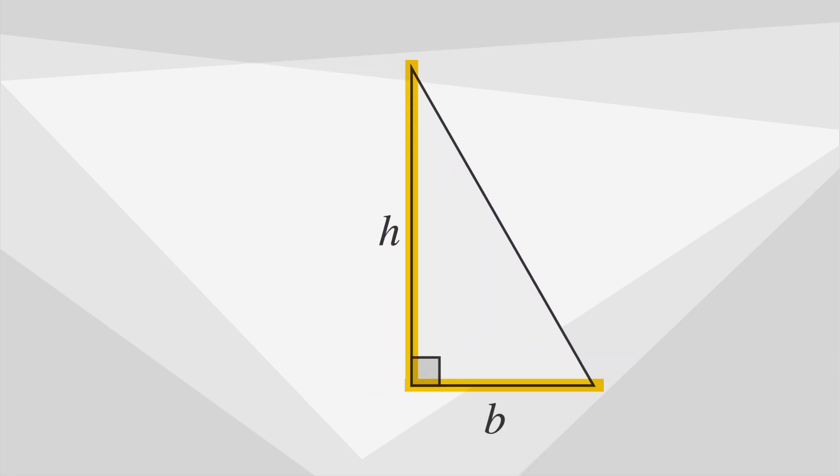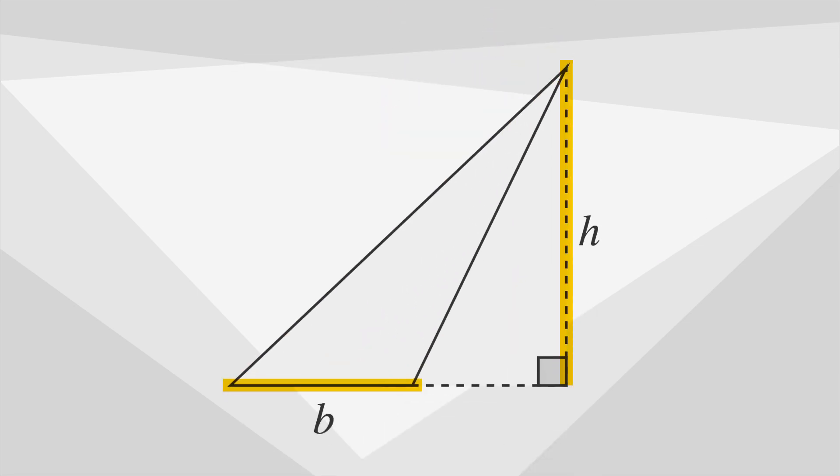In a right triangle, the base and height are the legs. Sometimes the height is outside of the triangle. Notice the base and height are still perpendicular to each other.